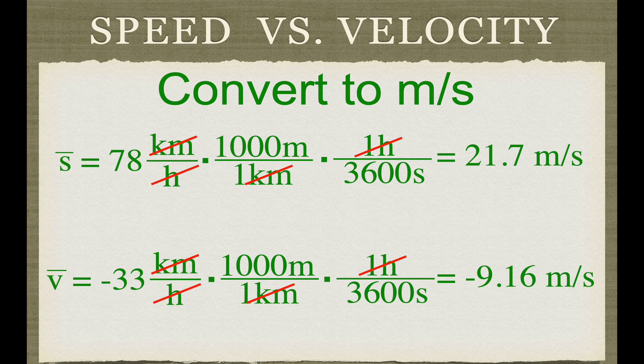So there you go — that's a description of average speed, average velocity, instantaneous speed, and instantaneous velocity, along with examples clarifying the differences between speed and velocity.